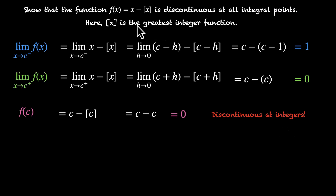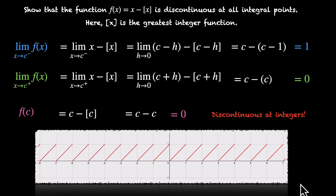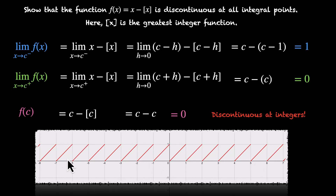By the way, f(x) = x − [x] is called the fractional part of x — it's also a famous function, just like the greatest integer function. Looking at its graph, at every integer such as x = 1, the left-hand limit is 1 and the right-hand limit is 0, which is also the value at that integer. This pattern repeats for all integers — there are breaks throughout, and all these breaks happen at integers.